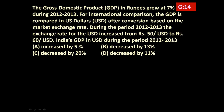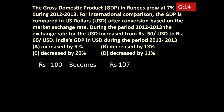India's GDP in US dollars during the period 2012–13: increased by 5%, decreased by 13%, decreased by 20%, or decreased by 11%? Out of these four options we have to find only one correct answer. Now, if GDP in rupees grows at 7% during 2012–13, if initially we have 100 rupees, at the end of the year it will become 107 rupees.